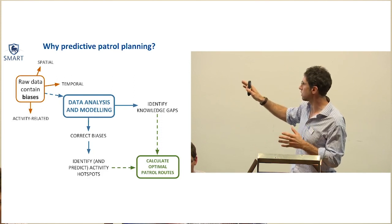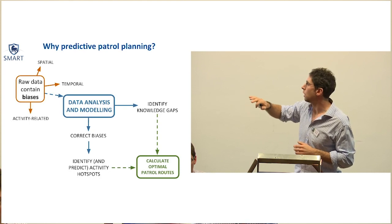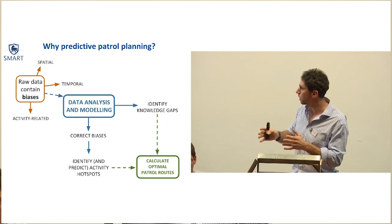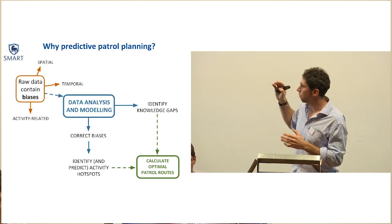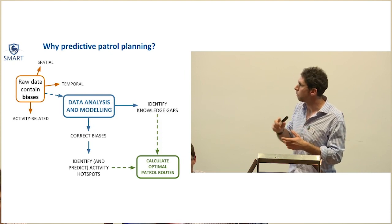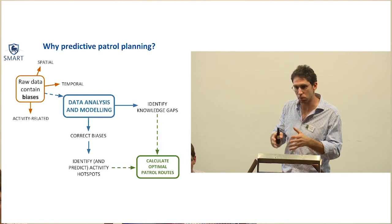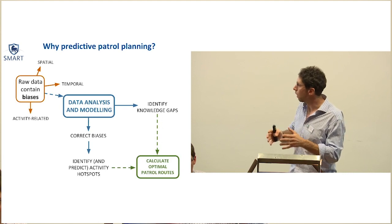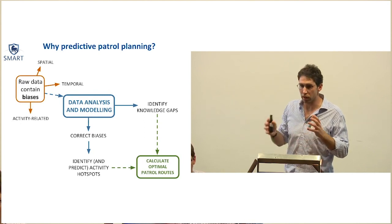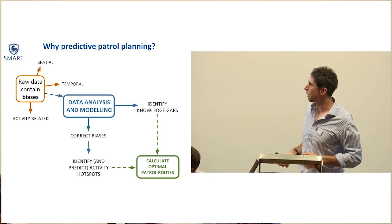This analysis will also allow us to identify knowledge gaps and fill in areas where we lack information. Using those two constraints, we can calculate optimal patrol routes. There's one other important point: if managers are using this kind of software to plan routes, they need to make an explicit decision about what they're targeting. As we all know, in most protected areas across the tropics, most illegal activities are carried out by people in the lowest income brackets — those with fewest economic alternatives, whose activities probably have the least impact on the environment. What we want to target are commercial poachers targeting things like rhinos for their horns or elephants for ivory.